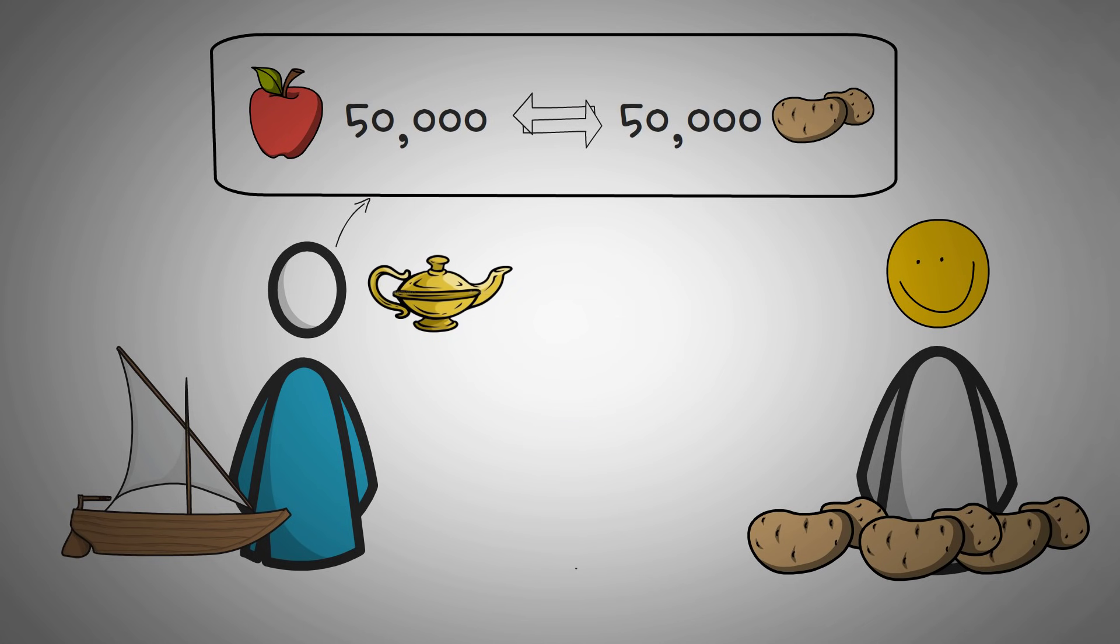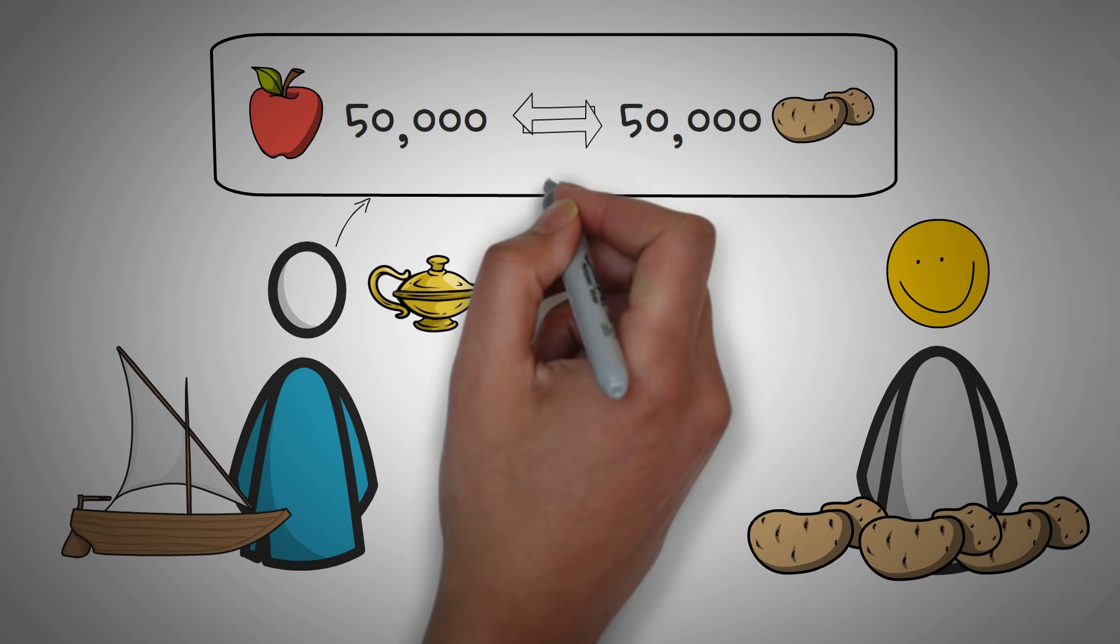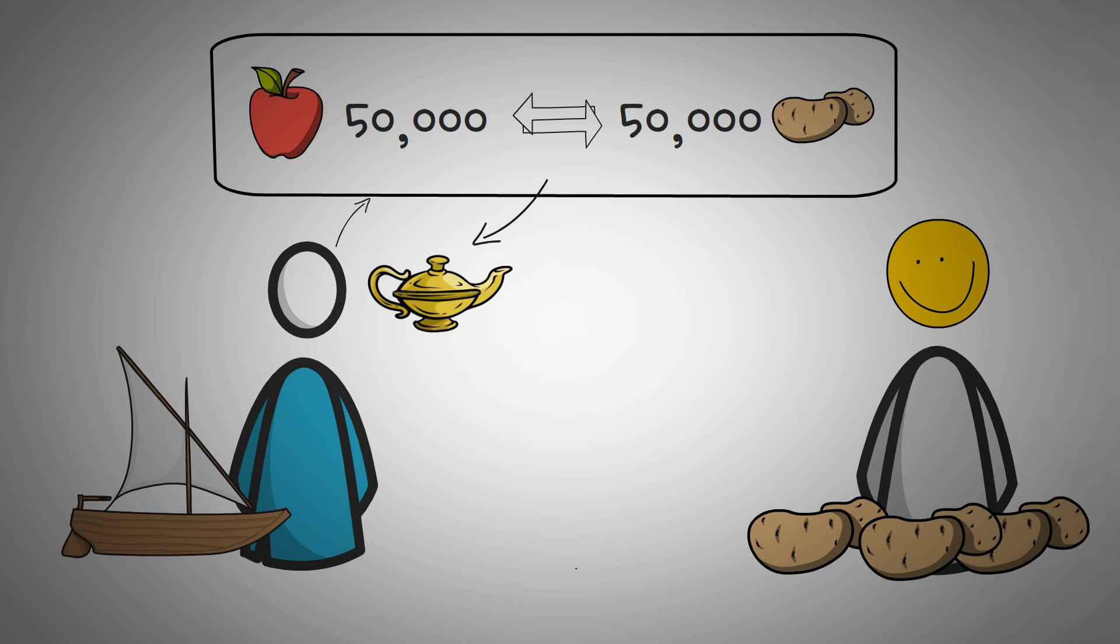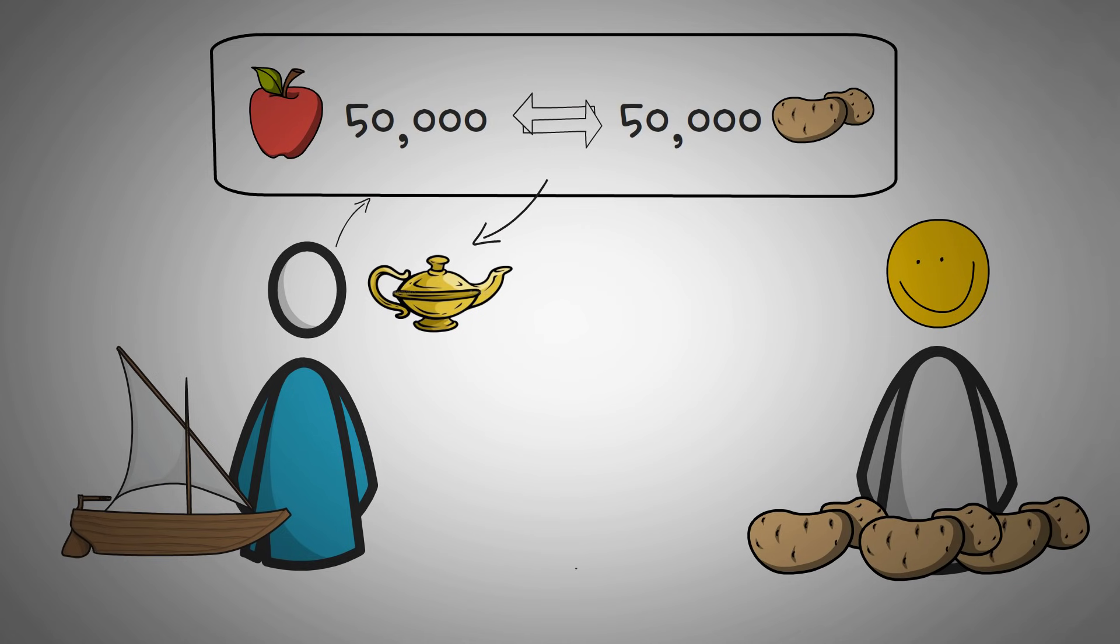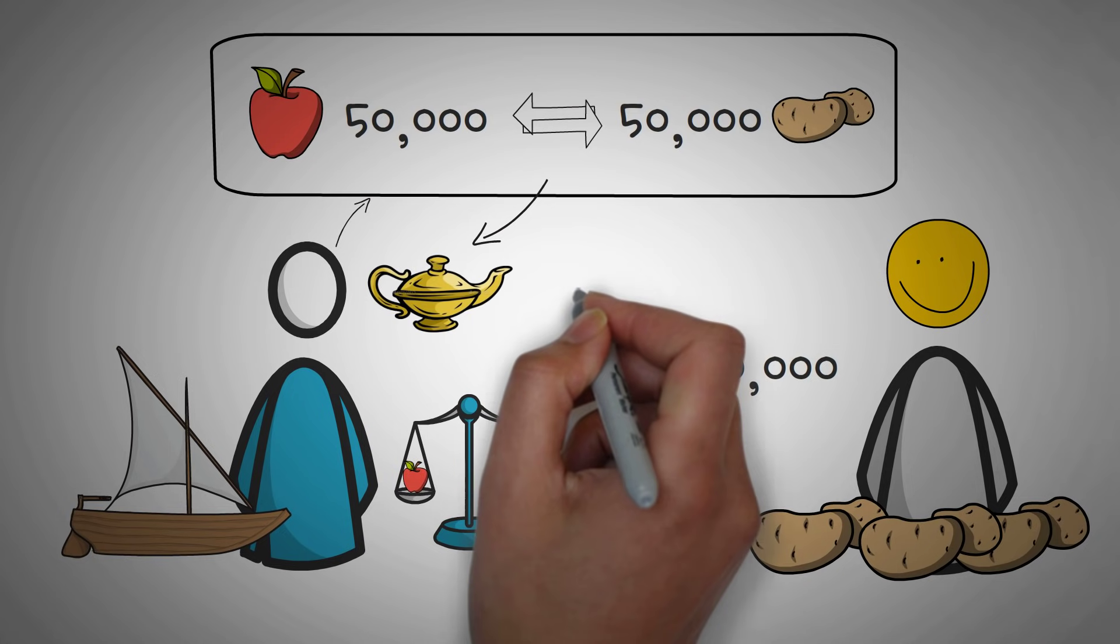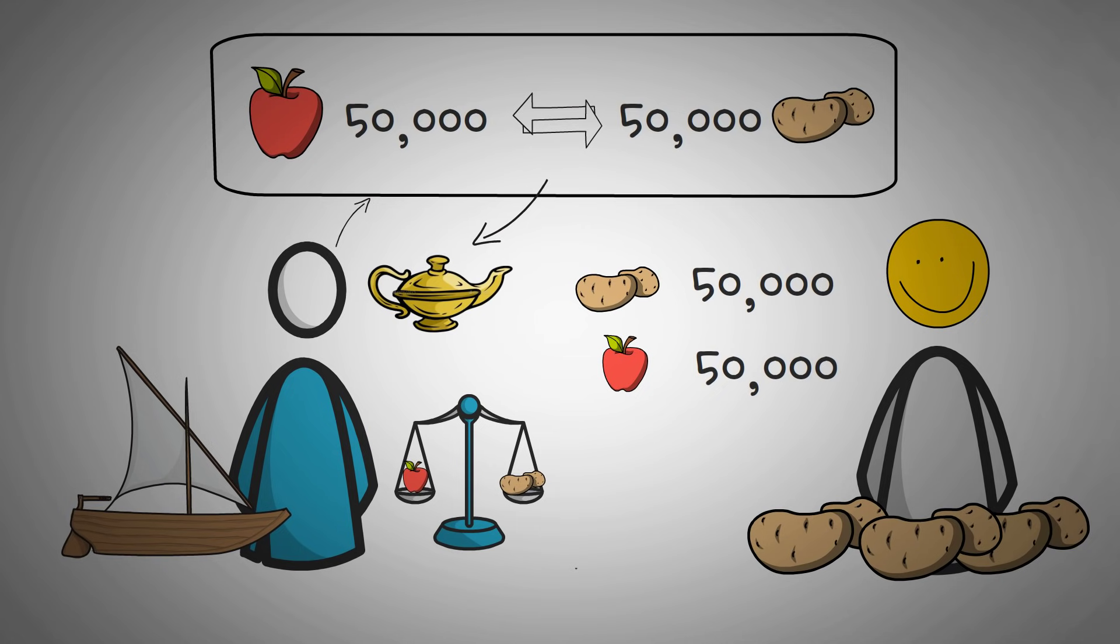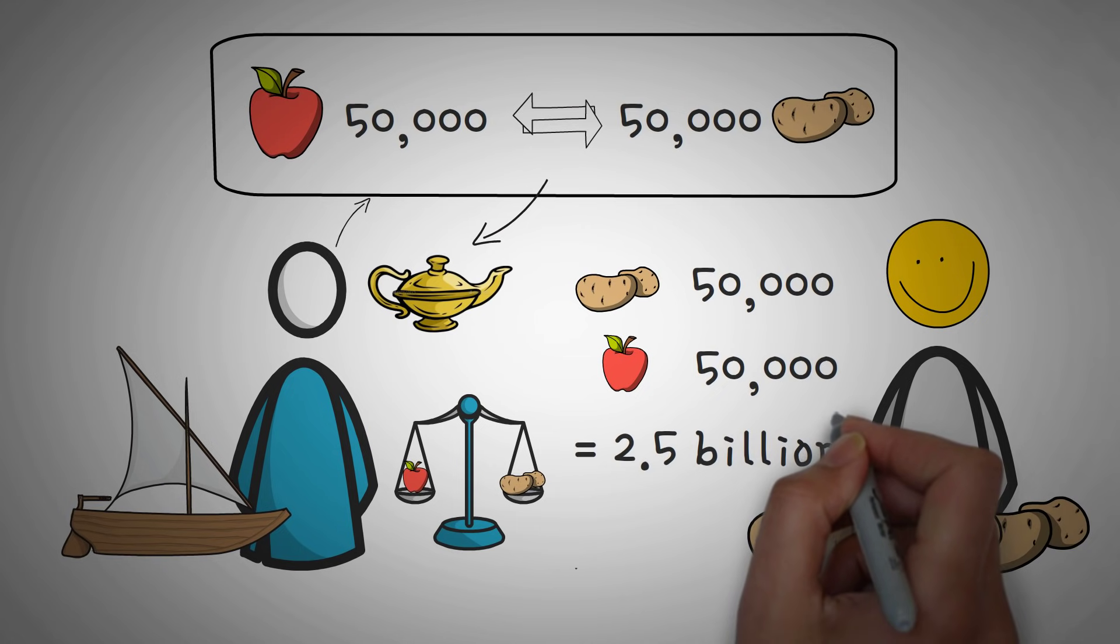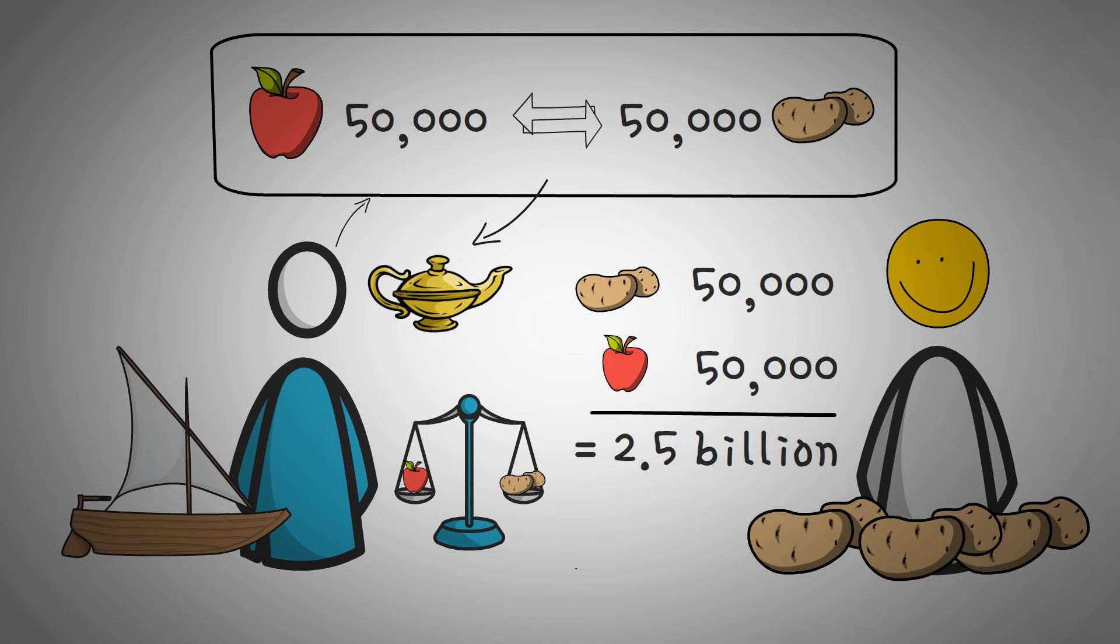The trader goes, here's the thing though, I have a magical genie with me that will store all 50,000 apples and all 50,000 potatoes in his magical lamp to keep safe. That way they don't go bad. But he wants to keep a perfect ratio of the value of both of these. The trader goes on, since together we put in 50,000 apples and 50,000 potatoes, he wants both of these numbers to always multiply to equal 2.5 billion, which is equal to 50,000 times 50,000.